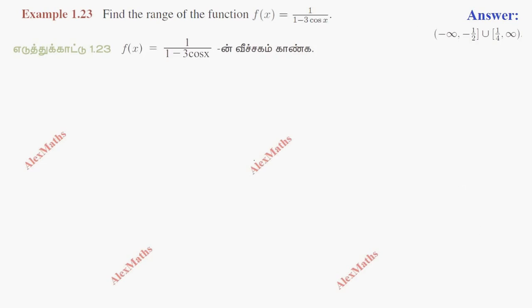Hi students, this is Alex here. Example 1.23: Find the range of the function f of x equals 1 over 1 minus 3 cos x.